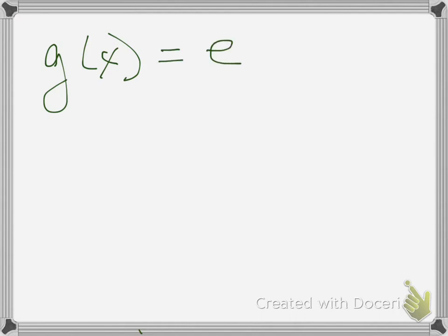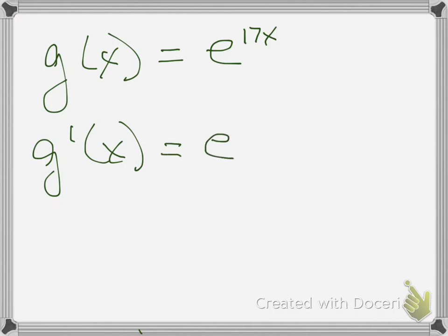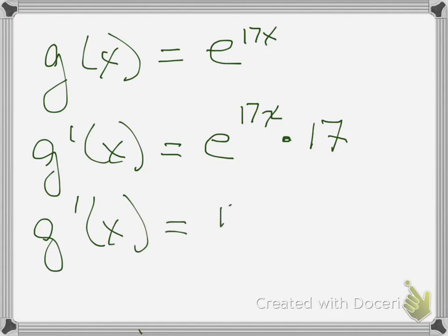Let's do e. So if g of x equals e to the 17x, then g prime of x — write down what you see and then take the derivative of your power — so my final answer is 17e to the 17x. Done. This should give you an overview of some of the basic rules of differentiation.